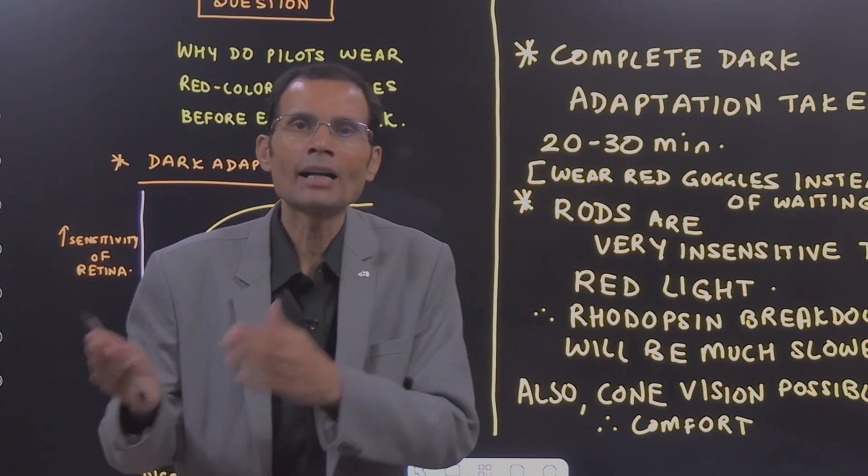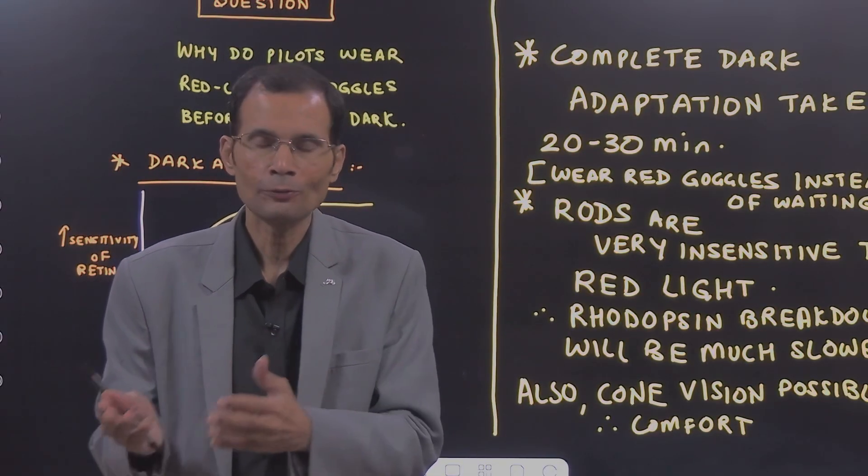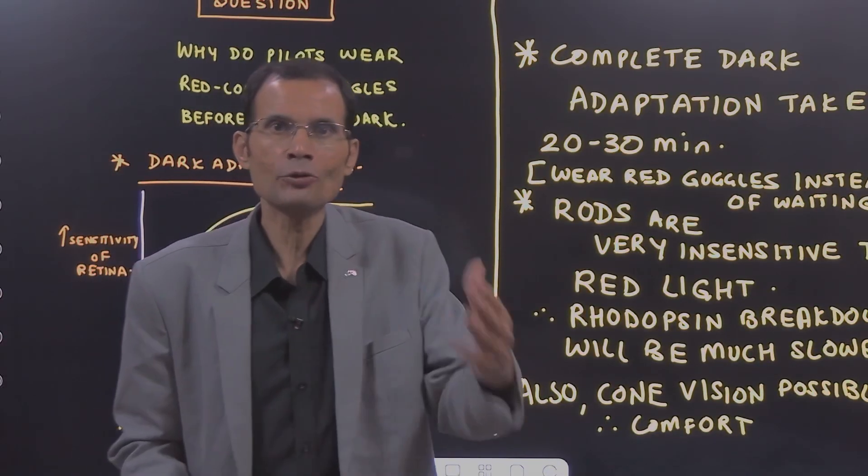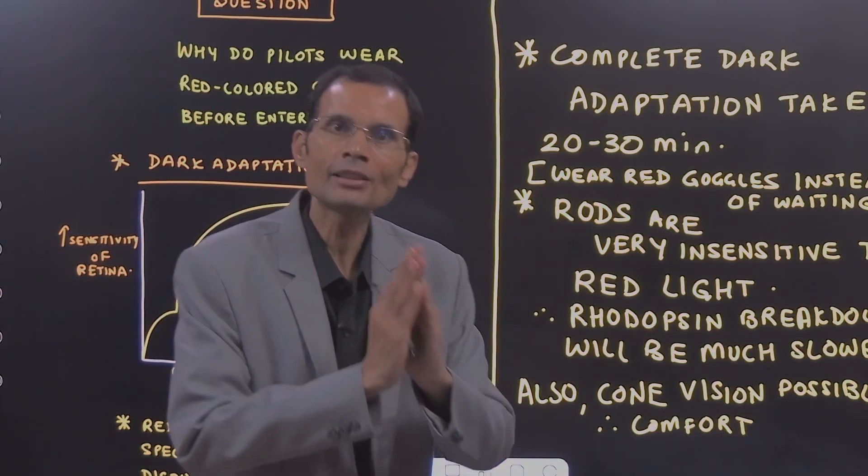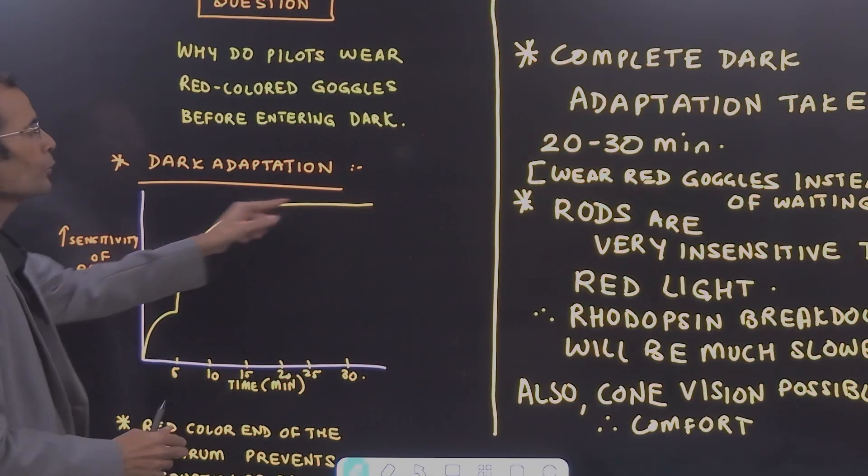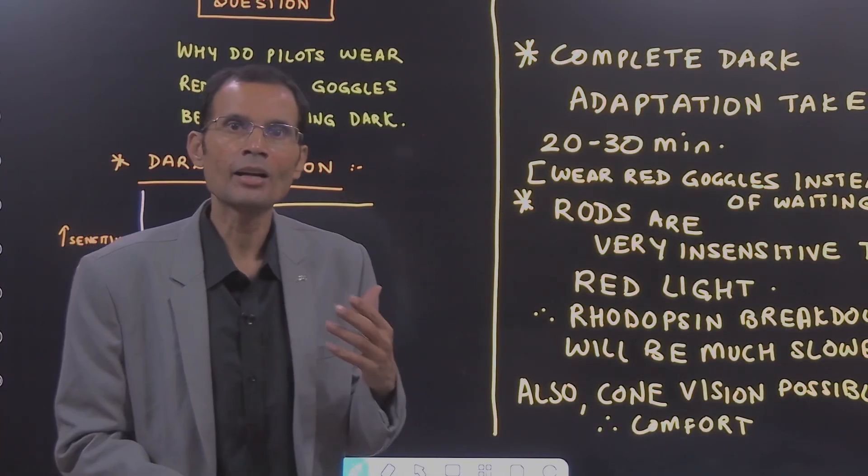It happens by alternate pathway, by the vitamin A storage form. There will be extra rhodopsin made available in the rods and that is how the sensitivity of the retina will increase.